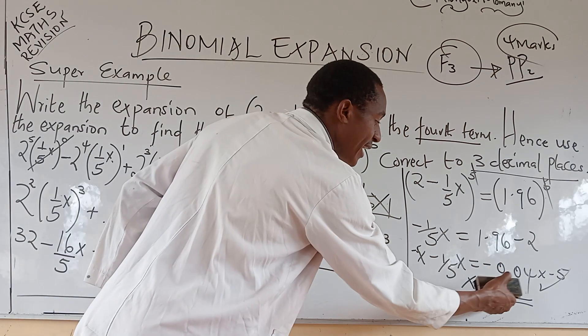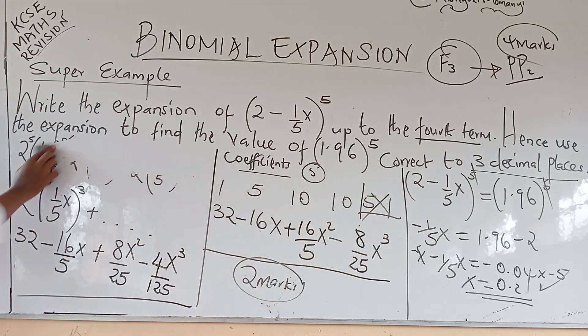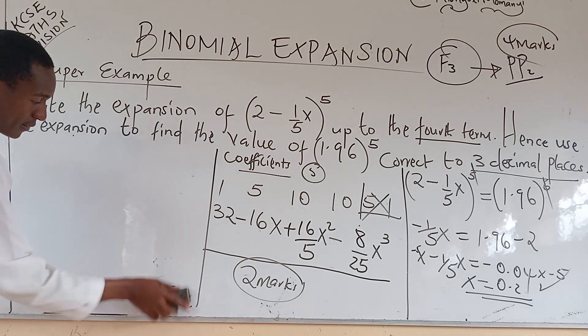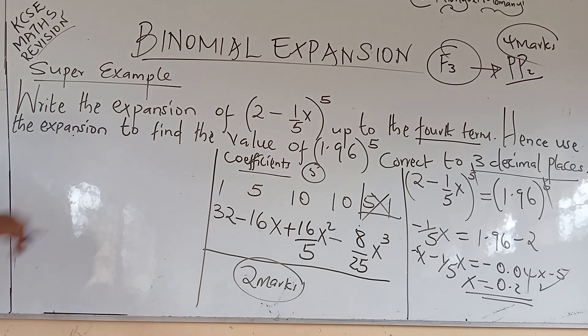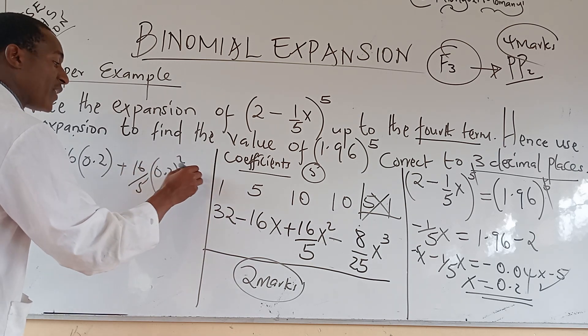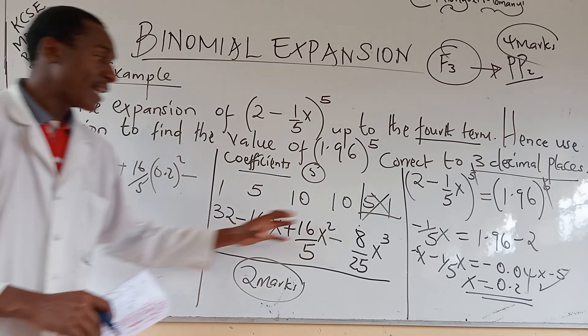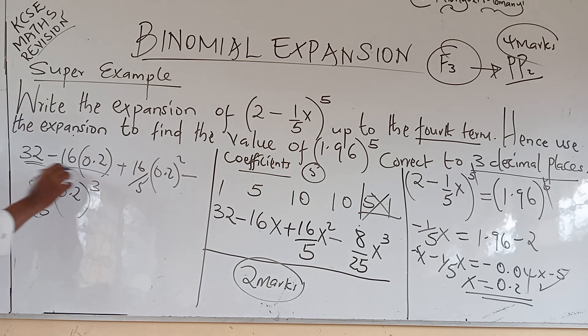Now, the other remaining part is you take this x value here and then substitute it in the binomial expansion. This is what you get. You use your calculator well. Thirty-two minus sixteen times zero point two, then plus sixteen over five times zero point two square. Then minus eight over twenty-five times zero point two raised to power three. I shall repeat, you are supposed to use your calculator. Then solve these values separately so that you get the accurate values and then put them together.